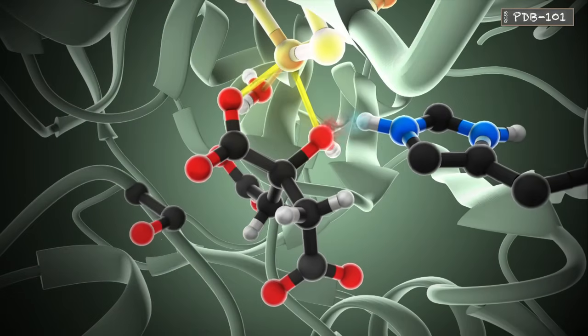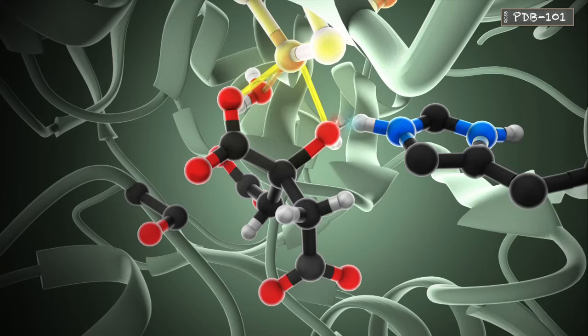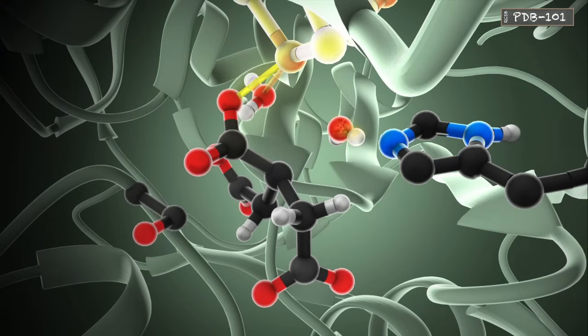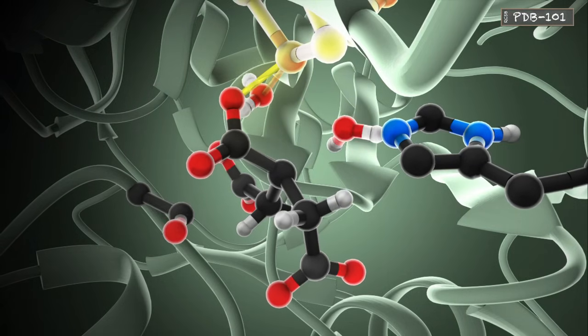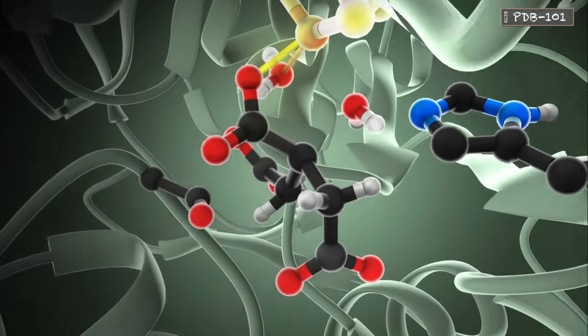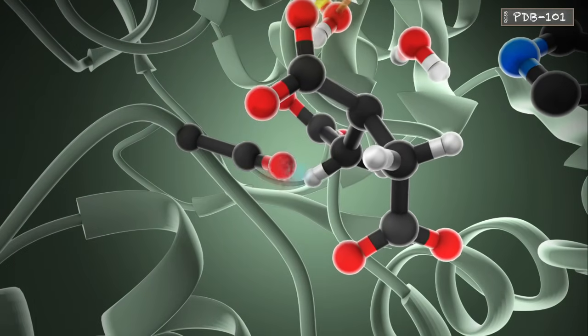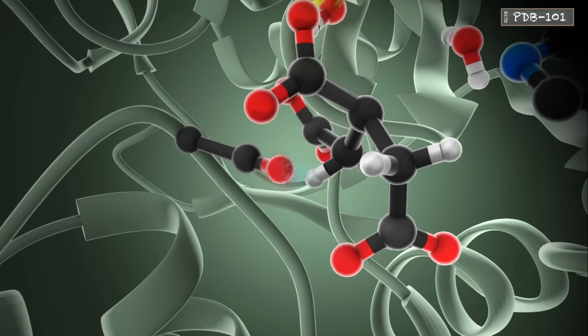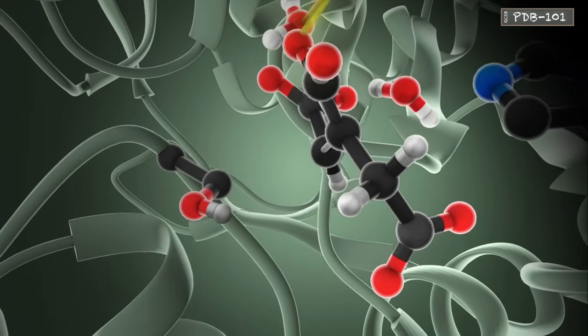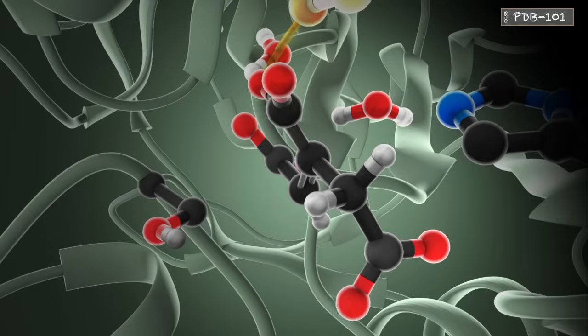The first step in the reaction is dehydration. In this step, histidine acts as an acid and protonates the hydroxyl on the substrate, allowing it to leave as a water molecule. Serine then acts as a base, extracting a hydrogen atom from the opposite side of the substrate, forming the intermediate cisaconitate.